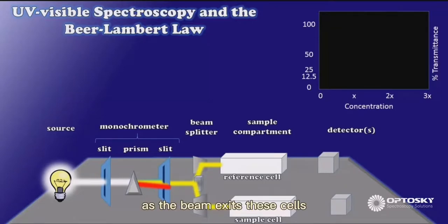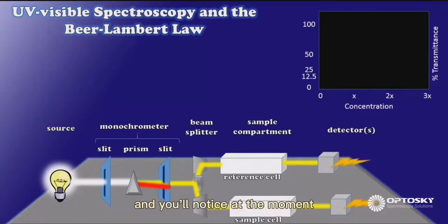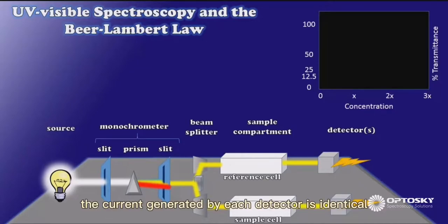As the beam exits these cells, it strikes the detectors, which are firing away, creating an electrical current. And you'll notice at the moment that the intensity of the light exiting both the reference and sample cells is identical. Therefore, the current generated by each detector is identical.